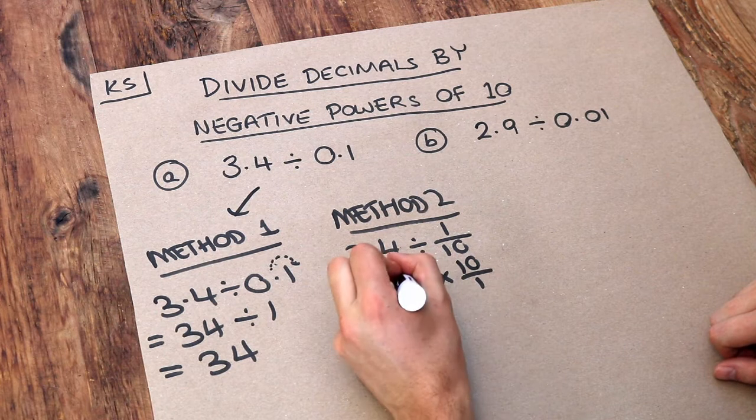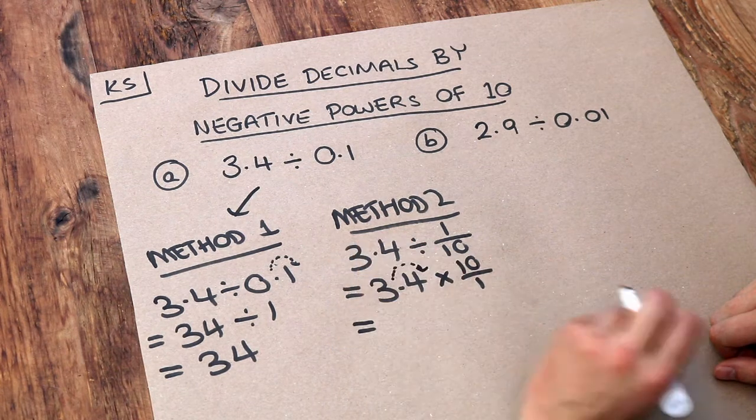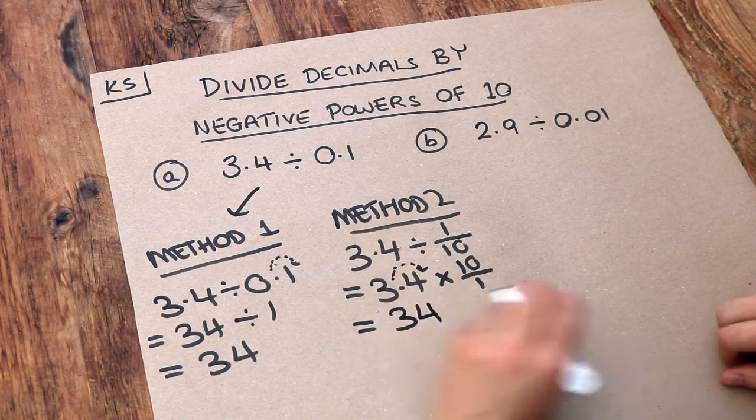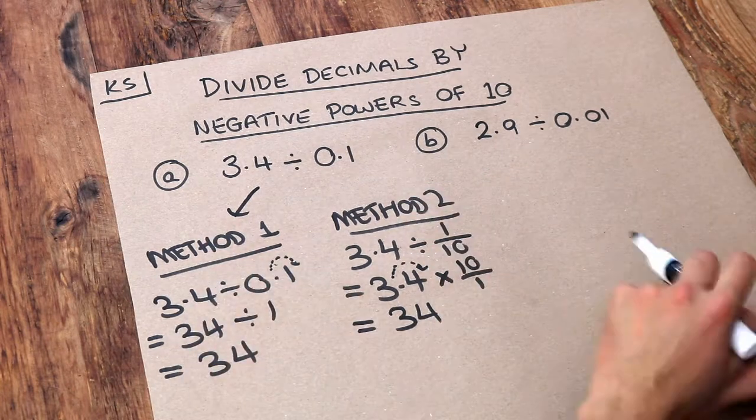That's 10 over 1. Now 10 over 1 is just 10. So we've ended up with 3.4 multiplied by 10. Now when we multiply by 10, that moves the decimal point one place to the right. So we end up with 34. So either method we use, we end up with 34.